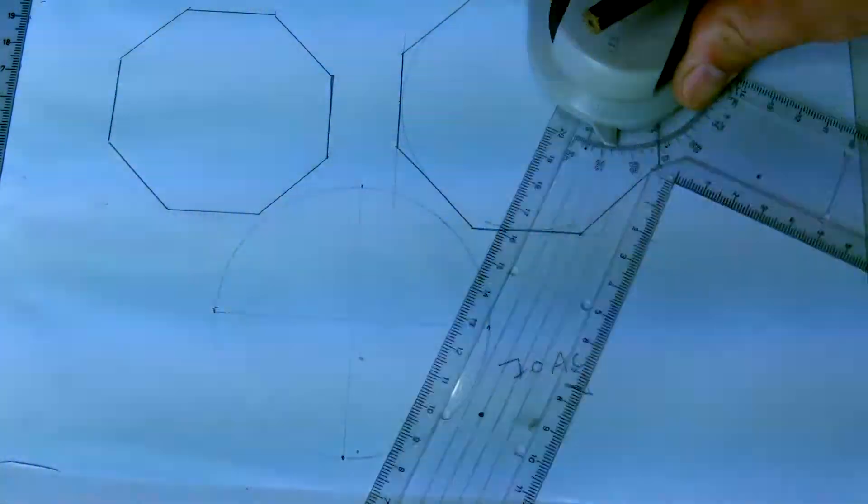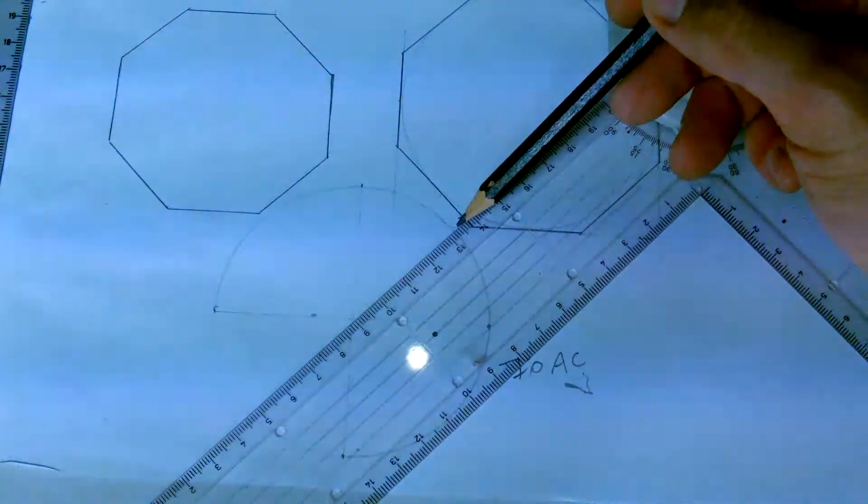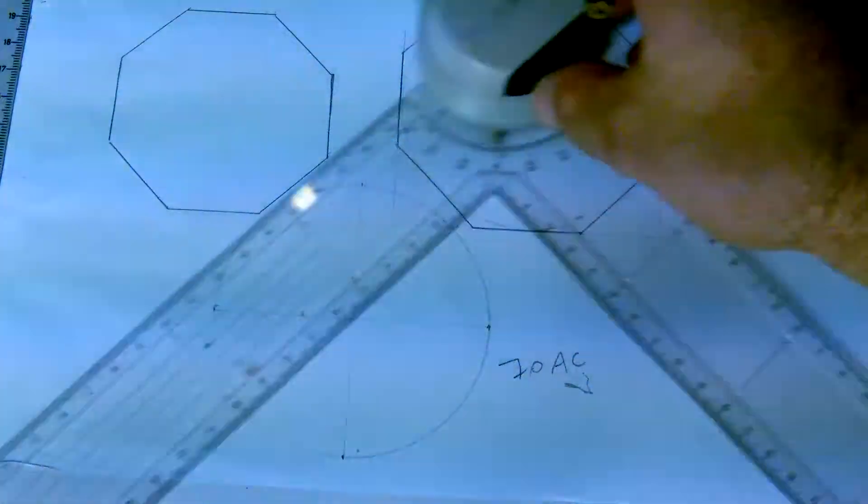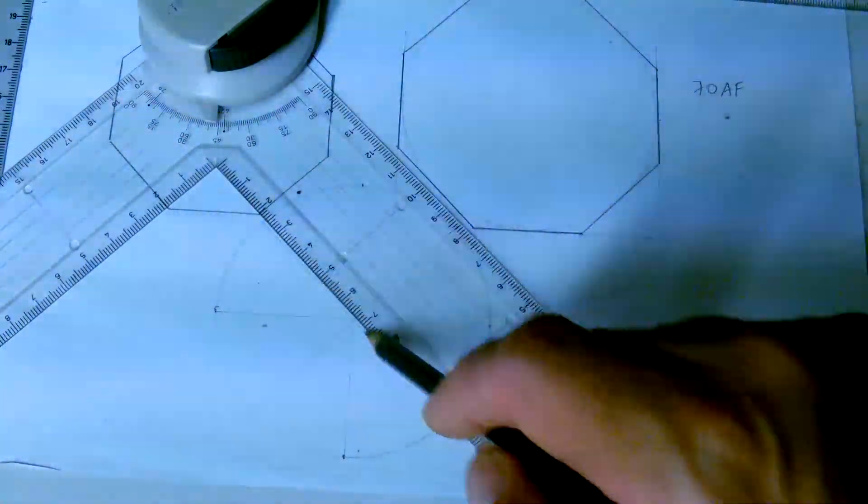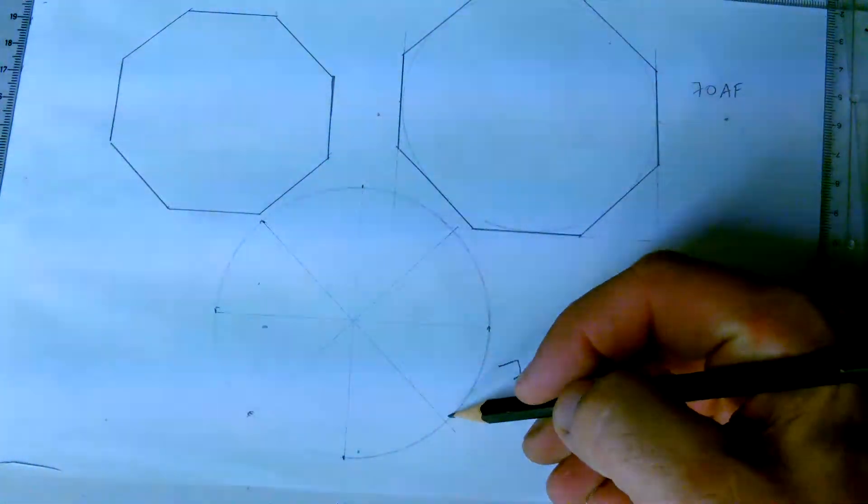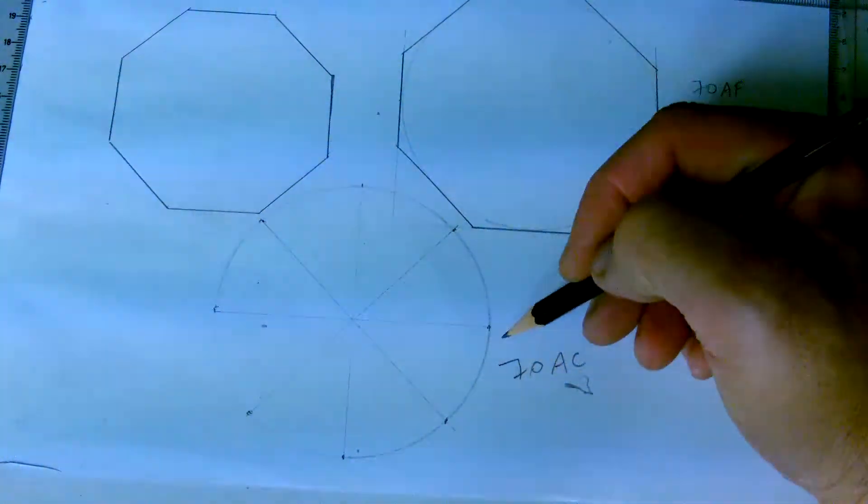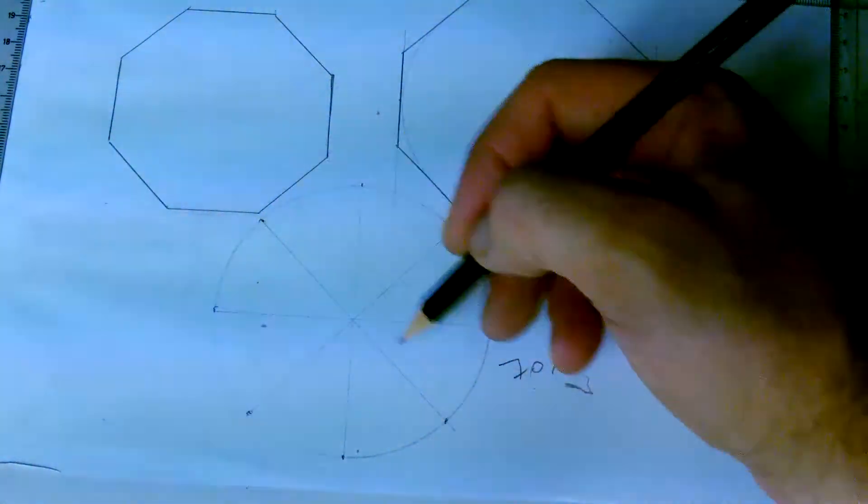Now to get the other four points, I'm going to find the midpoint of those angles, which is at 45 degrees. That way, and that way. And that gives me my eight points, equally distant and in a circle of 70 diameter. So it's 70 AC.